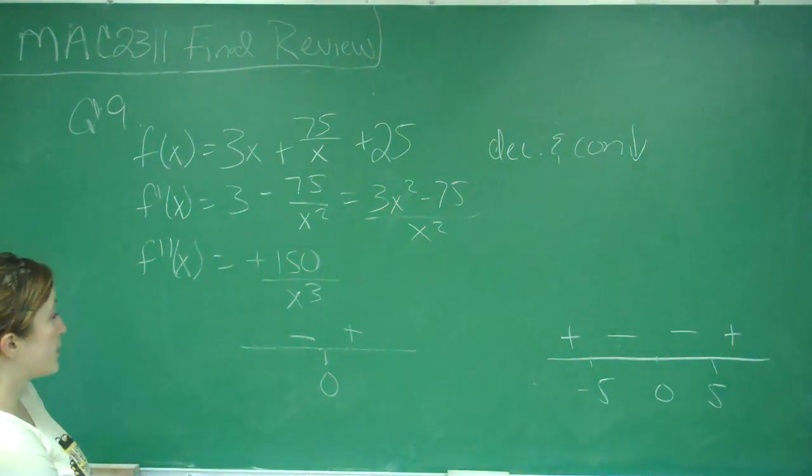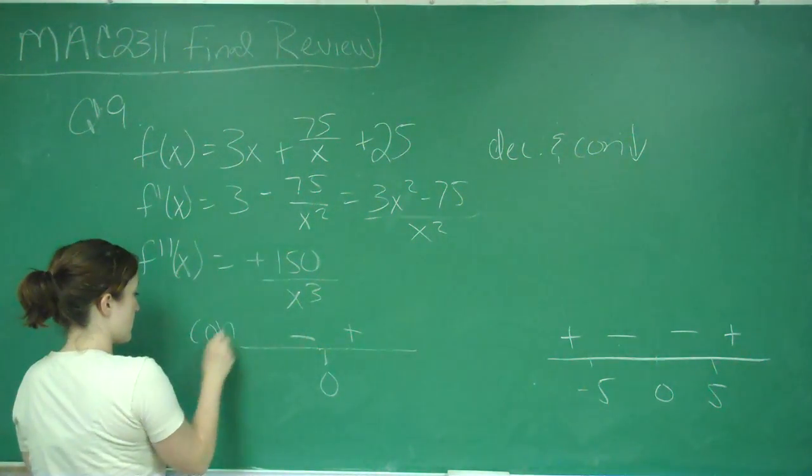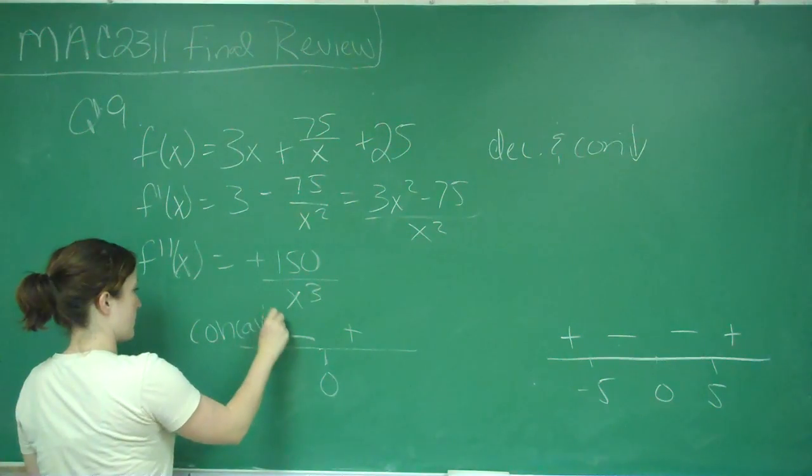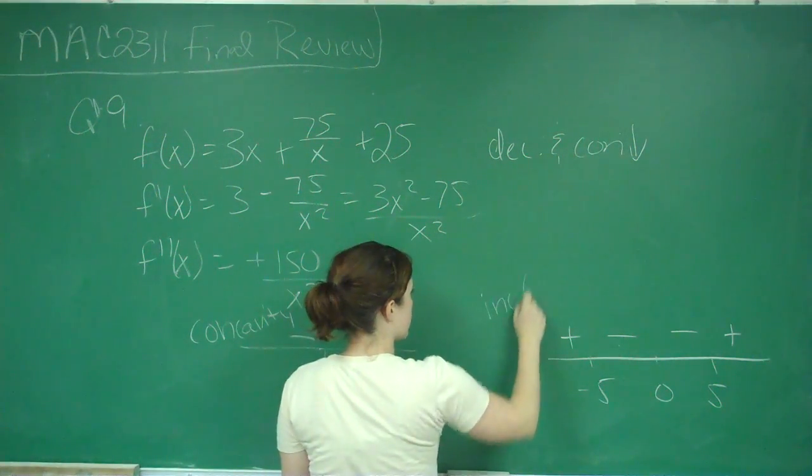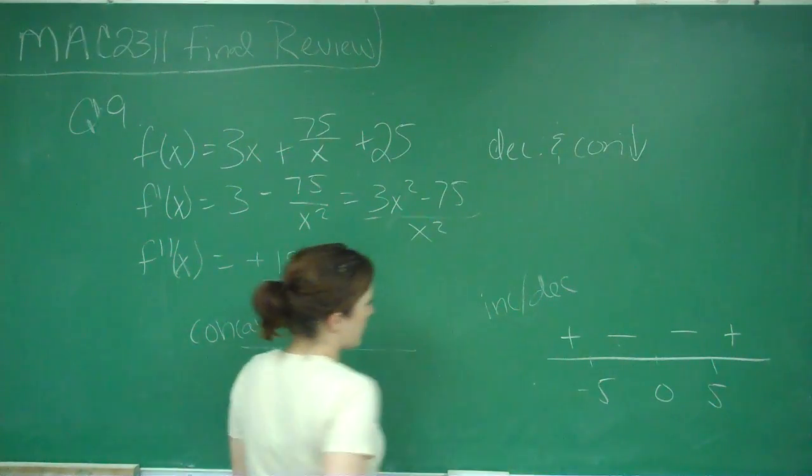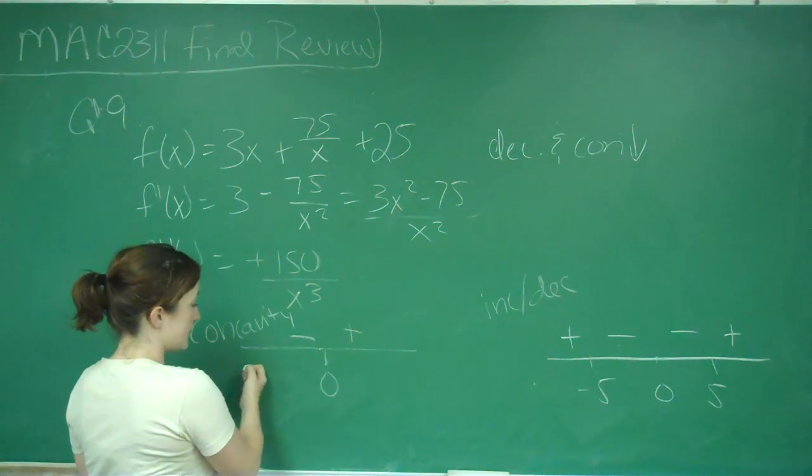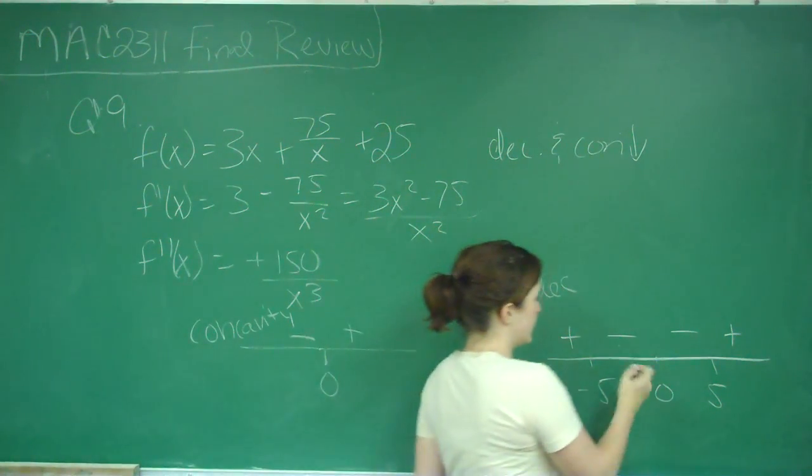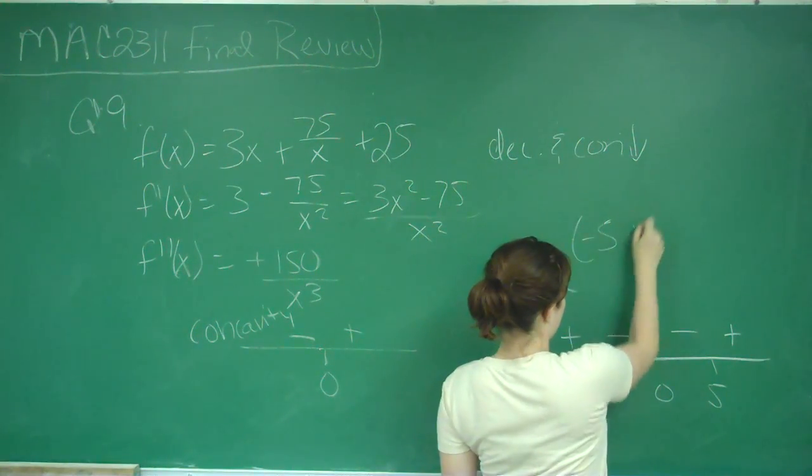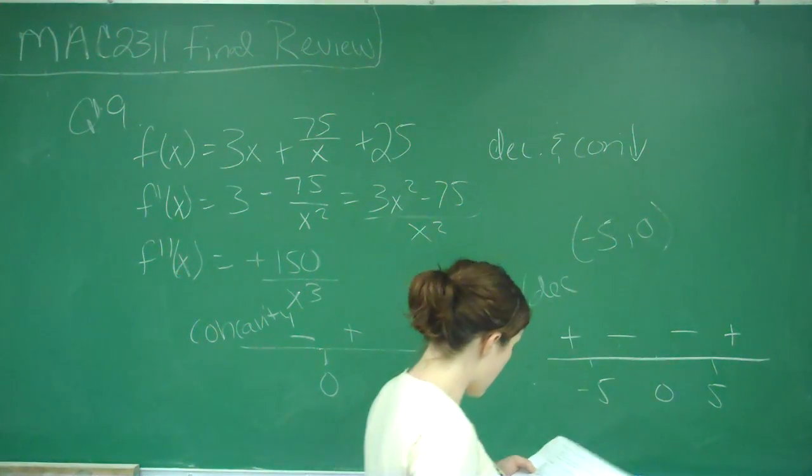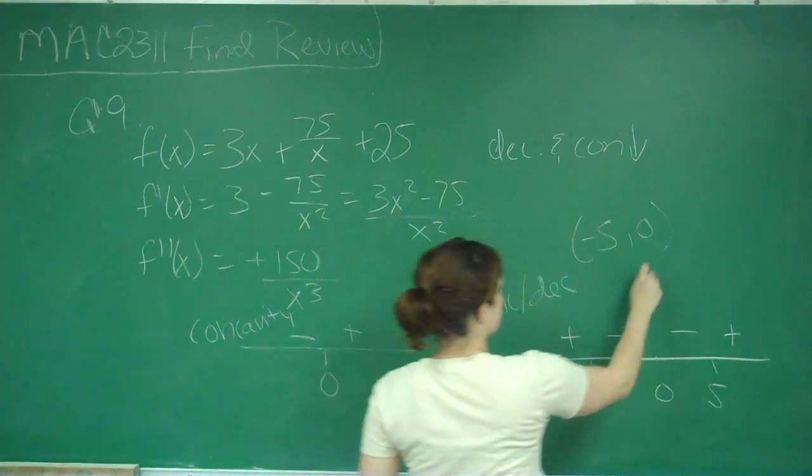So if we want to know the interval where it's both decreasing and concave down, this is concavity, and this is decreasing. I can compare my graphs, and I know that I'm concave down for anything less than 0. So I come over here, and I want to look where it's decreasing on that interval, and it's only decreasing from negative 5 to 0. And that is answer choice A.